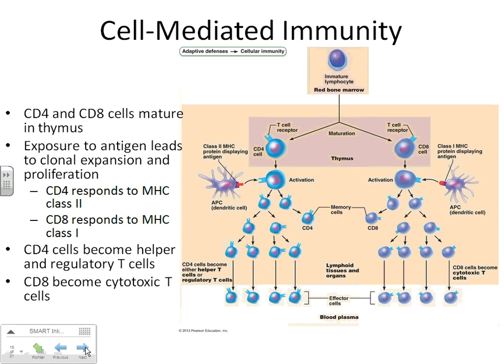We've done our B cells — now we need to see what T cells do. The T cell is actually much simpler than the B cell, that's why I do B cells first. When your T cells are activated, you're going to have two different T cells: a CD8 T cell and a CD4 T cell.